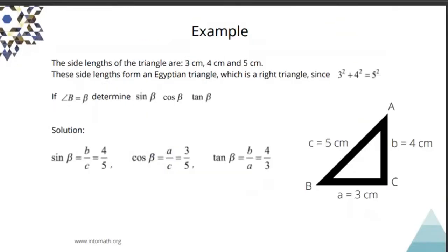Let's take a look at this example. The side lengths of the triangle are 3, 4 and 5 centimeters. 5 is the hypotenuse, it's the longest slant side. The side lengths form an Egyptian triangle which is a right triangle since 3 squared plus 4 squared equals 5 squared.